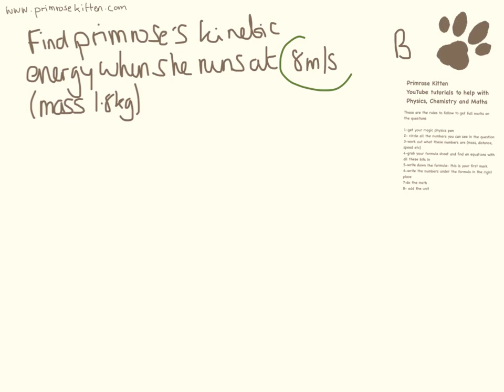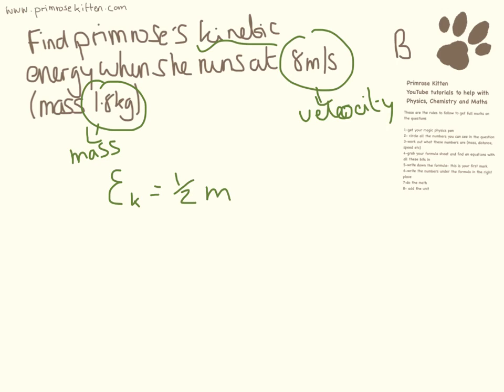Primrose's kinetic energy when she runs at 8 metres per second, and her mass is 1.8 kilograms. So that's her mass, and this is her velocity. So kinetic energy we're looking for, and kinetic energy is half mass velocity squared. So we have half times 1.8 times 8 squared. So I like to break this down into little sections. So we can do half times 1.8 times 64, which is 8 squared.